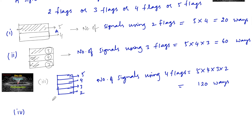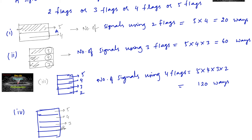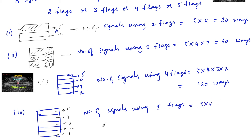In the same manner, if we use all 5 different flags: the first flag has 5 possibilities, the second 4, the third 3, the fourth 2, and the last one only 1 possibility. By the multiplication principle, the number of signals using 5 flags is 5 × 4 × 3 × 2 × 1 = 120 signals.